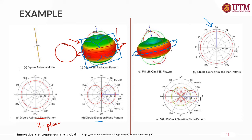Omnidirectional means the radiation spreads across all directions. But when we cut it vertically, we may see something like small loops at the top and bottom, and we can see the front loop and back loop as well — something like this in the E-plane.